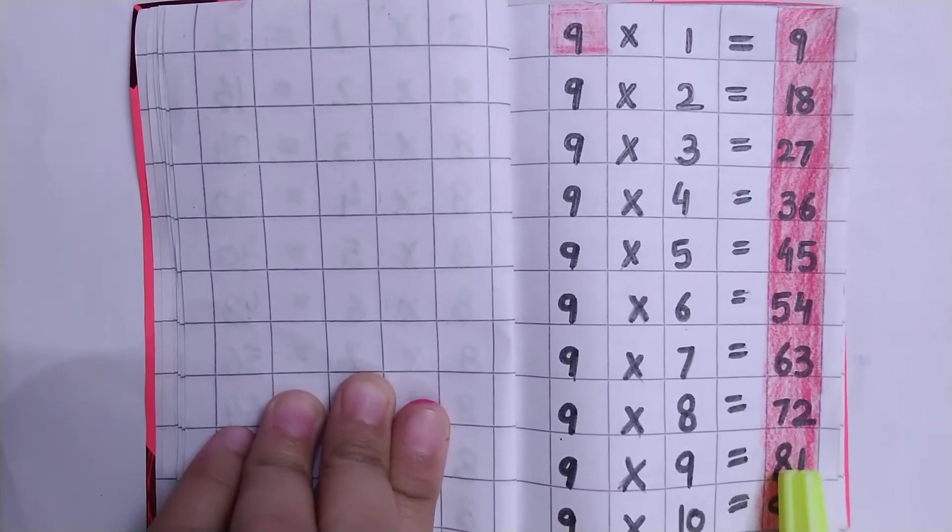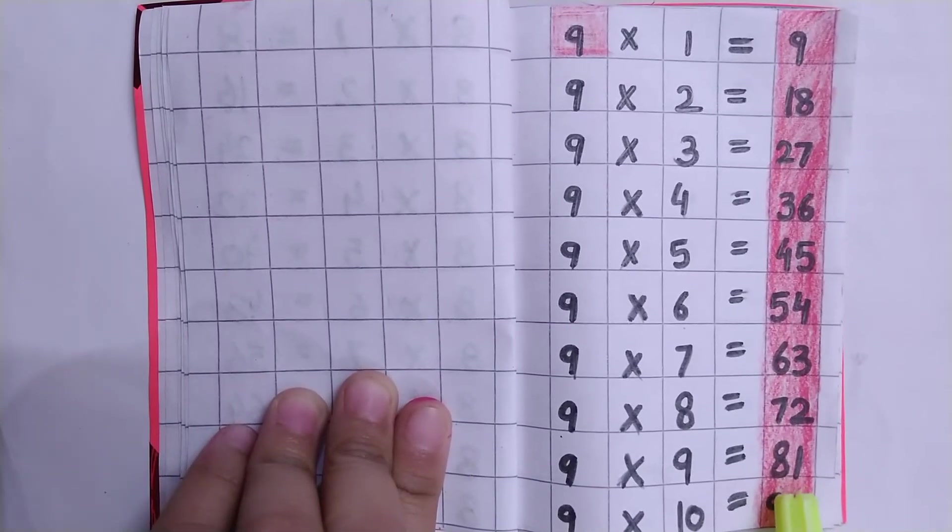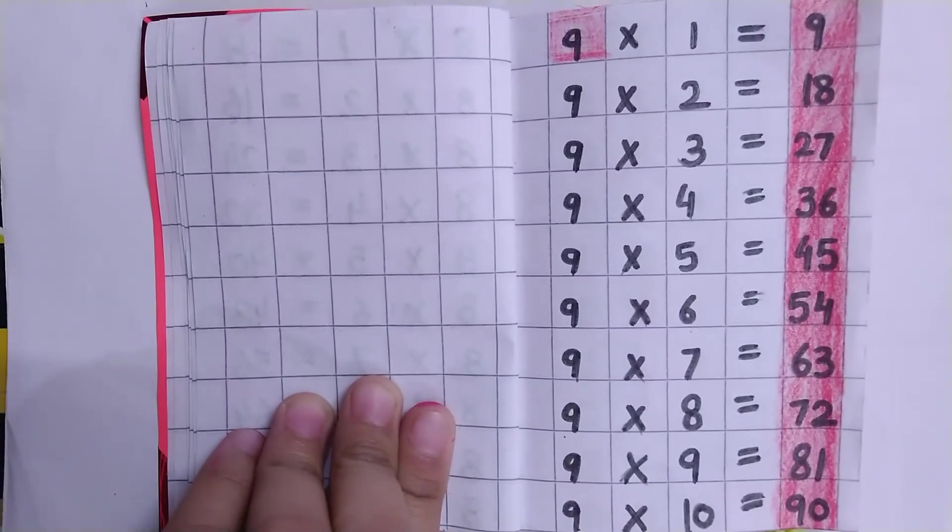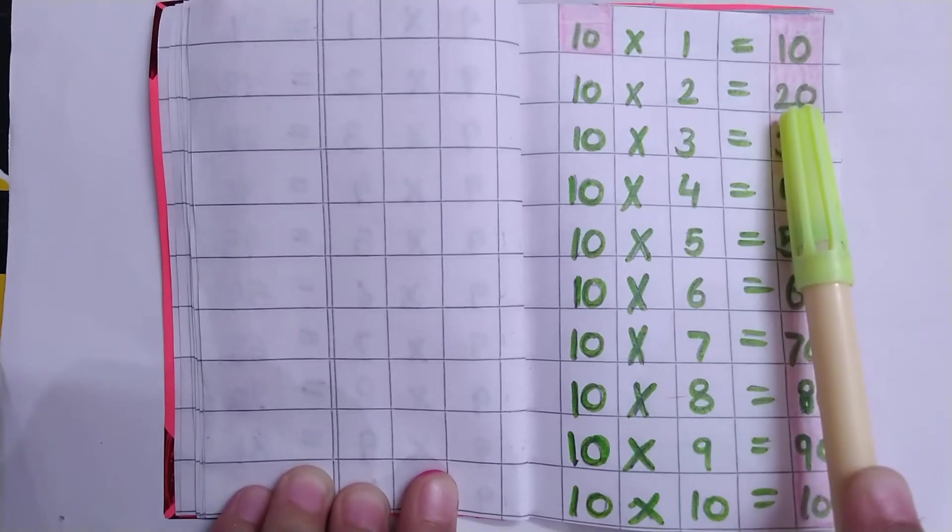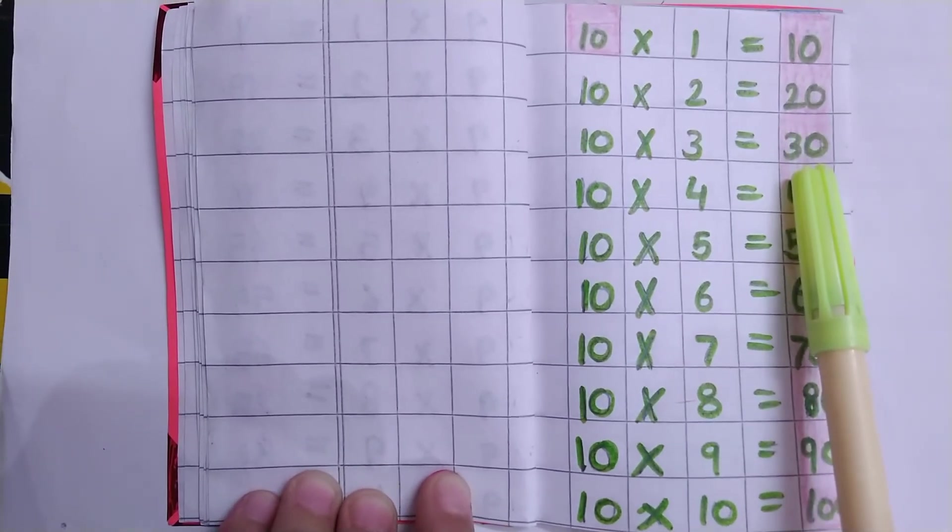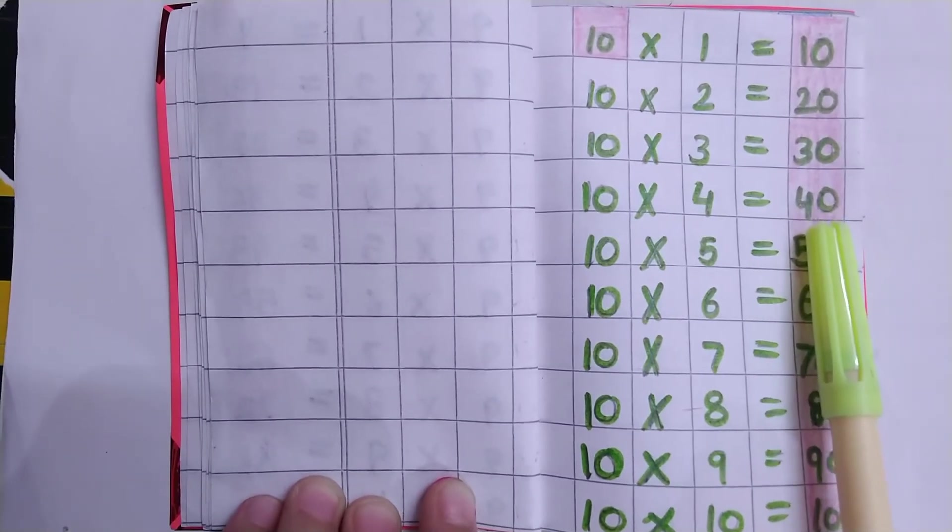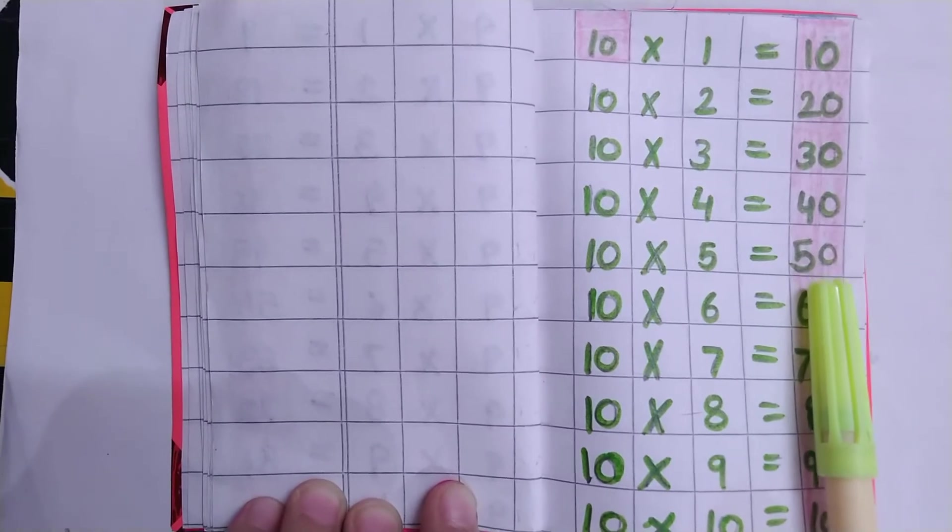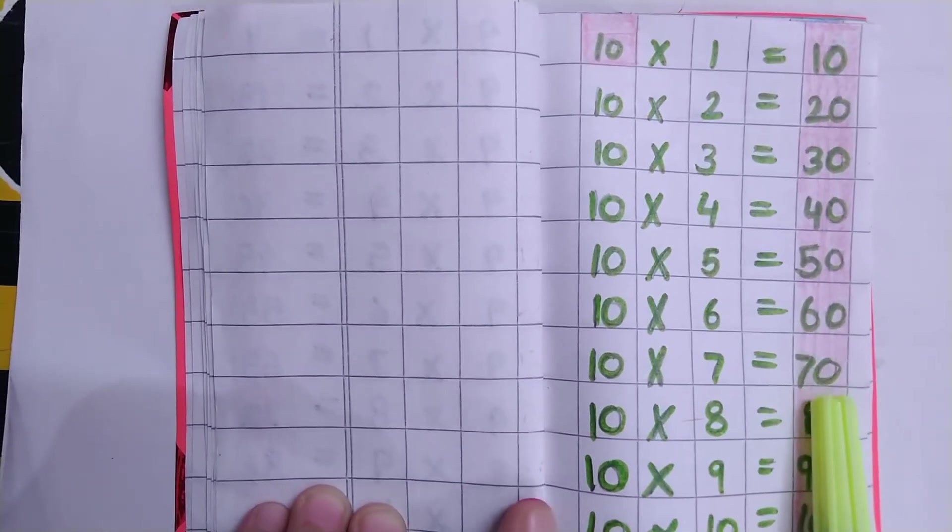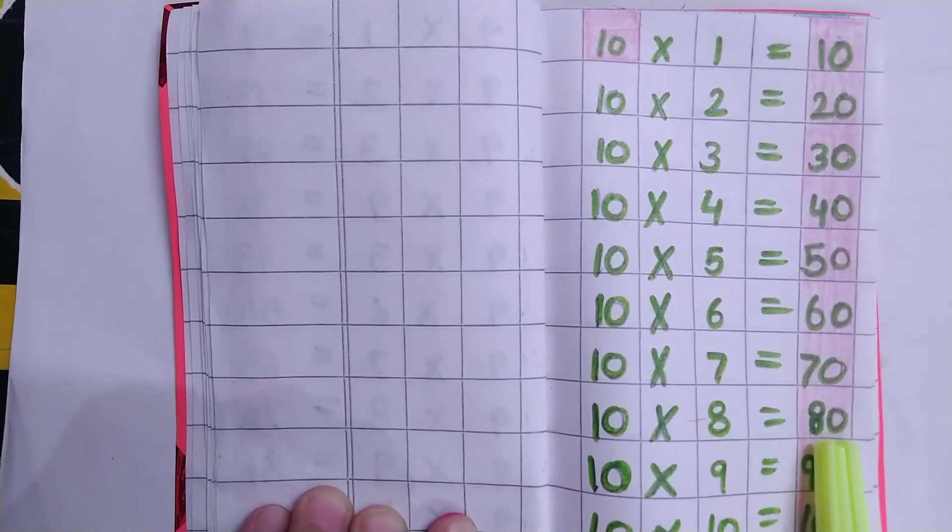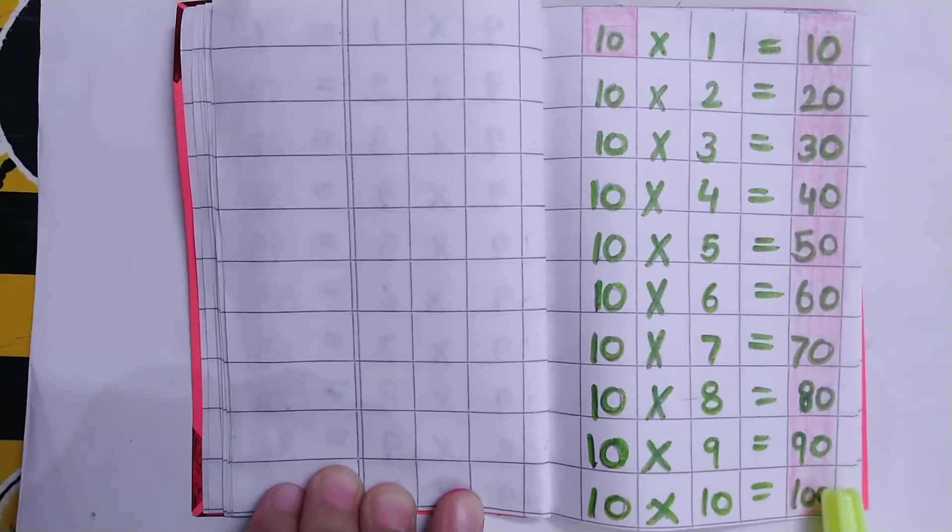Table of 10: 10×1=10, 10×2=20, 10×3=30, 10×4=40, 10×5=50, 10×6=60, 10×7=70, 10×8=80, 10×9=90, 10×10=100.